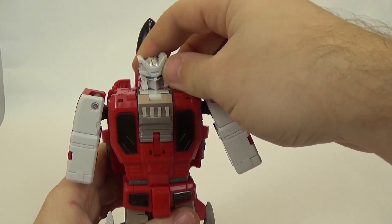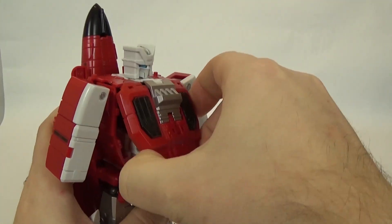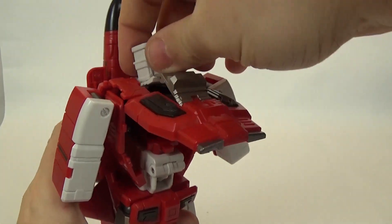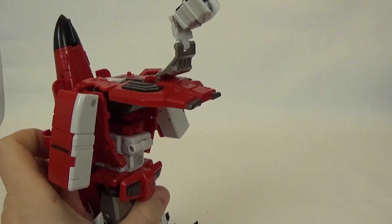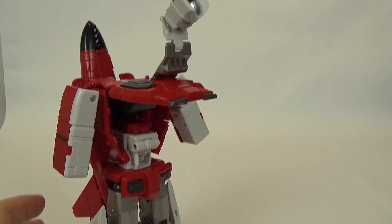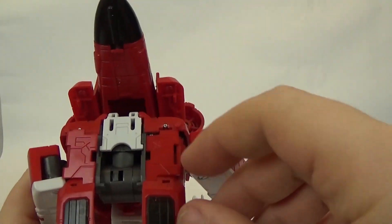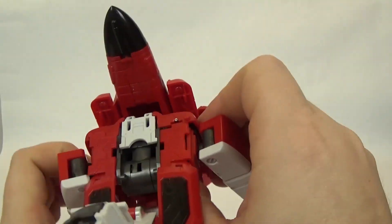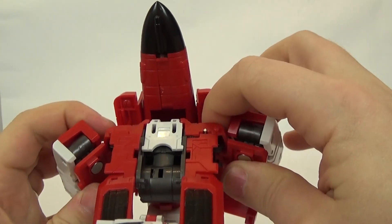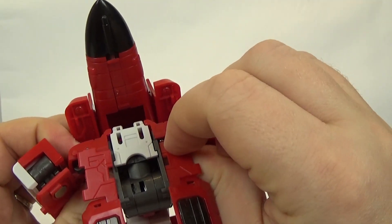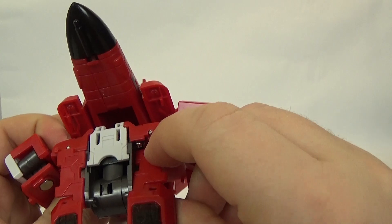And, now, you want to lift this chest piece up. You can pull the head up and out of the way if you want. And, then these two panels on the top, you can pull these arms out just a little bit to get them out of the way.